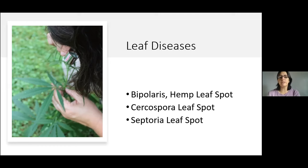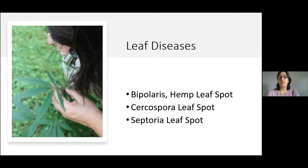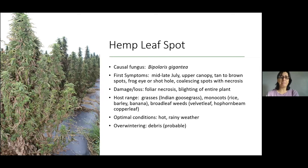Our three top leaf diseases: hemp leaf spot, which some people are calling bipolaris leaf spot, caused by the fungus Bipolaris gigantea. We called it hemp leaf spot for a long time because we did not know the causal agent. Cercospora leaf spot — very common in hemp. And septoria leaf spot, which probably gets the most attention, recently identified as Septoria cannabis. Starting with hemp leaf spot: this was a fairly new revelation, and Bipolaris comes in around mid to late July as temperatures get hot.